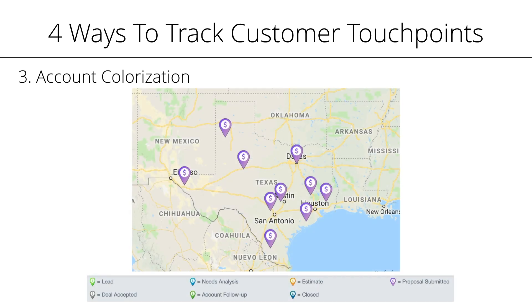On this map, we can see that Doug is having a hard time moving his proposals to closed deals in his Texas territory. Doug can reflect on these accounts and see if there's anything he can change to start converting those proposals into sales.